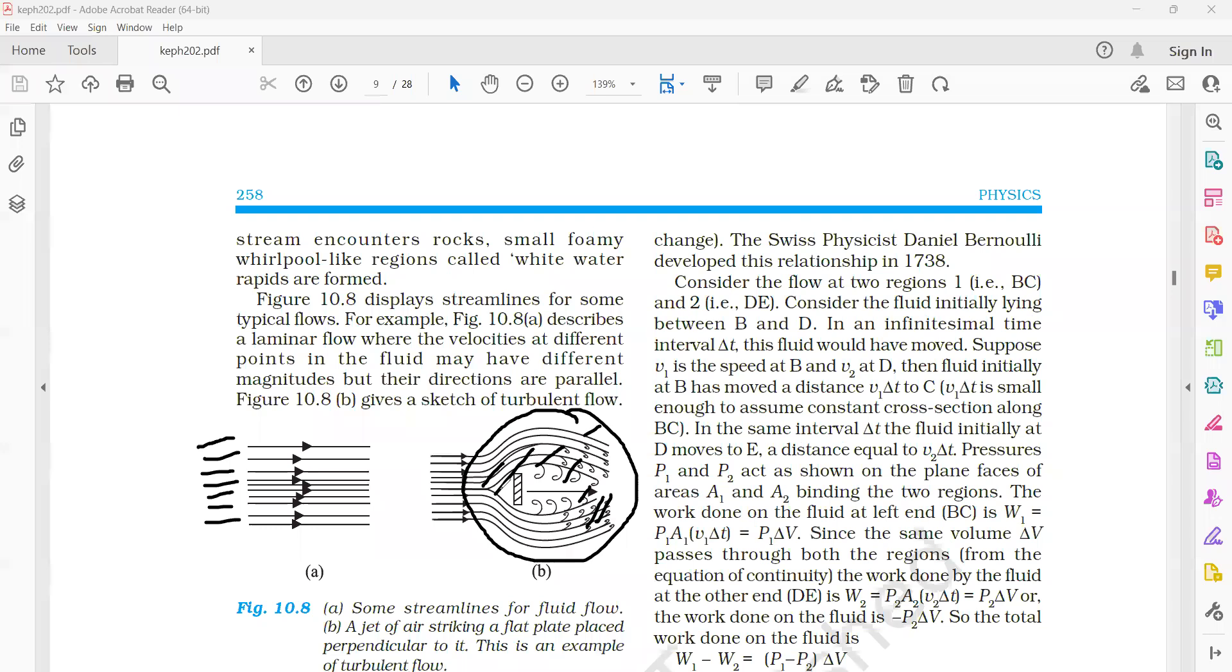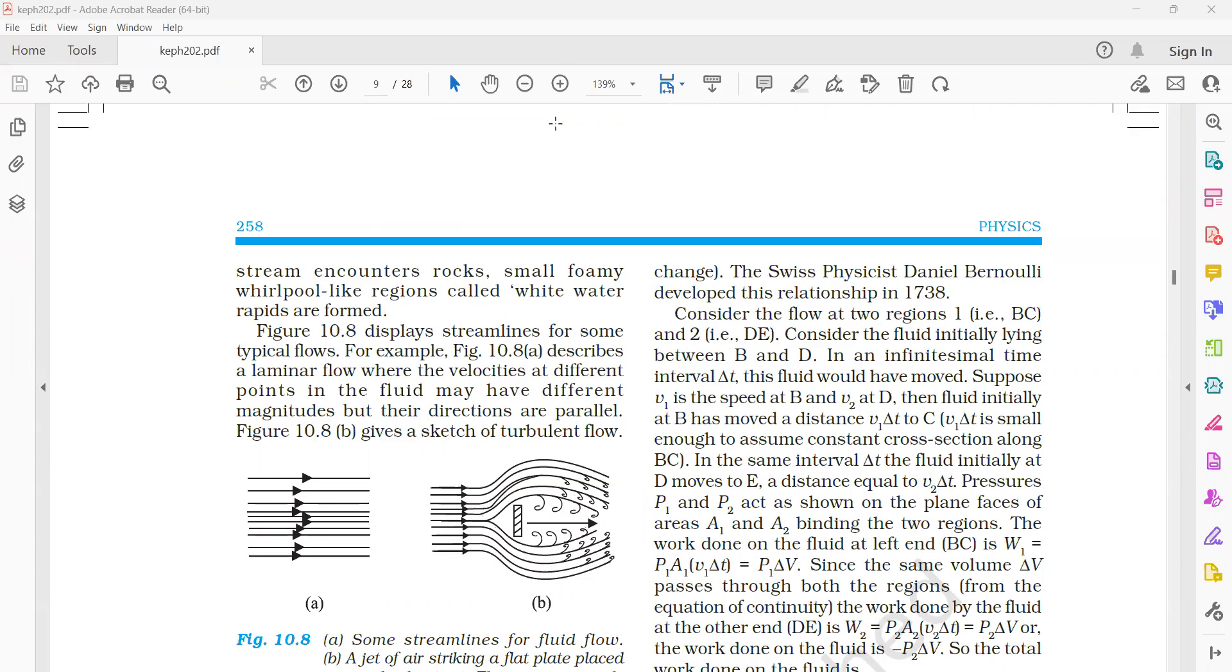In this turbulent flow, the steady flow principle is not followed. So this is the difference between steady flow and turbulent flow. In the steady flow, the area into velocity remains constant, whereas in the turbulent flow, this principle will not be followed.